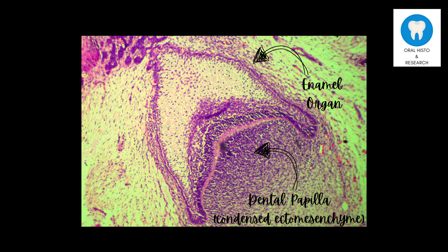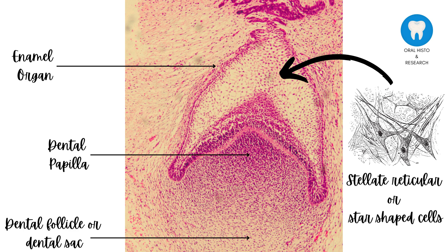More significant differentiation is seen in the central and peripheral cells during this stage. The central polygonal cells change into the stellate reticulum cells, with a somewhat star-shaped appearance due to greater water intake, pushing the cells apart but retaining their desmosomal attachments.